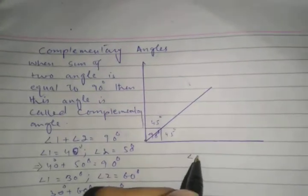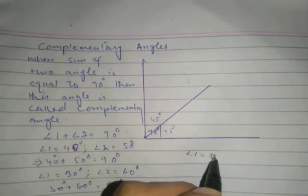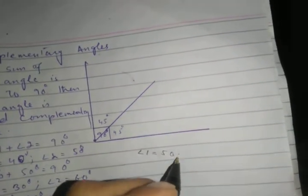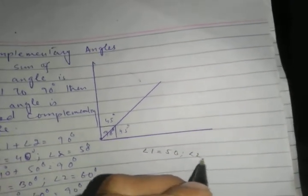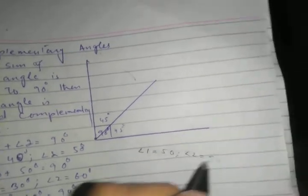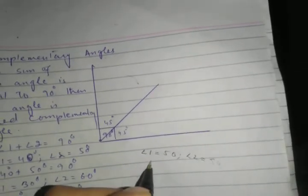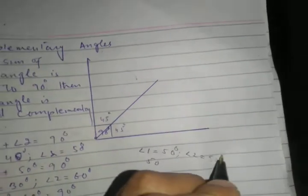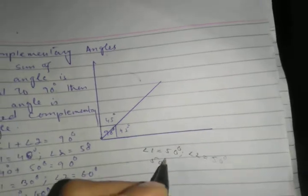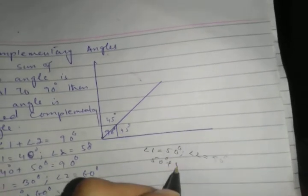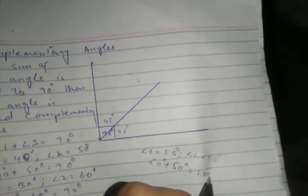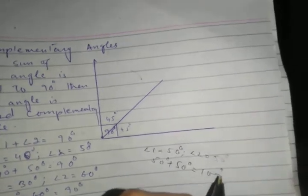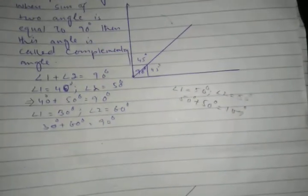Now suppose angle one is equal to 50 degrees and angle two is also equal to 50 degrees. Then 50 degrees plus 50 degrees equals 100 degrees. Since the sum is not 90 degrees, this is not a complementary angle.